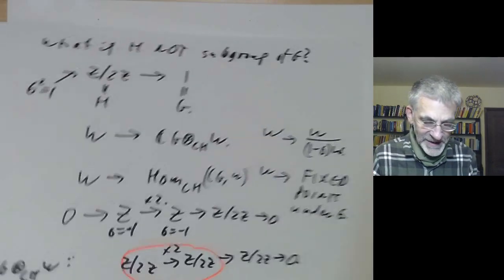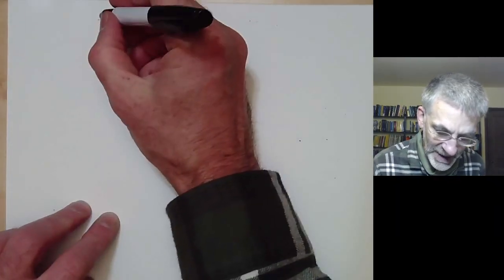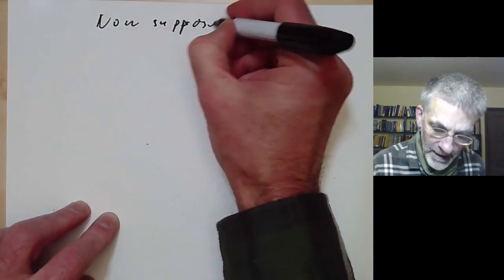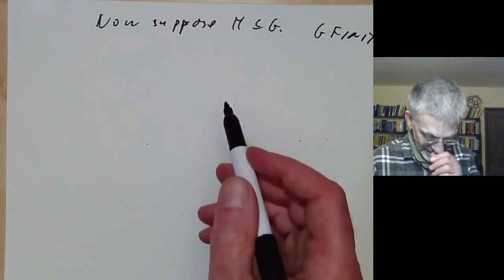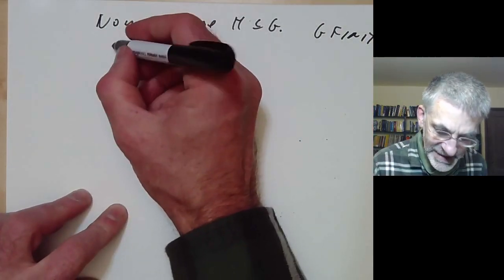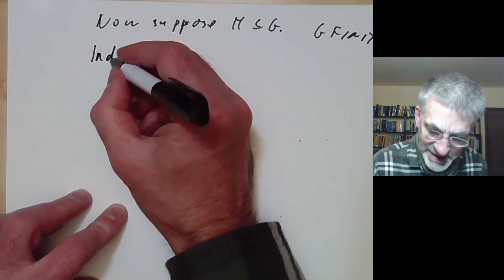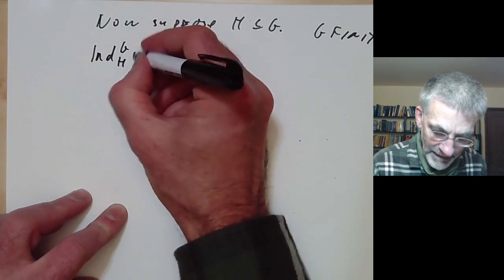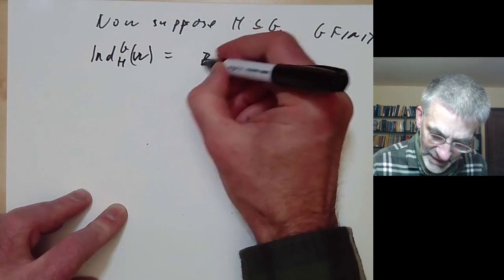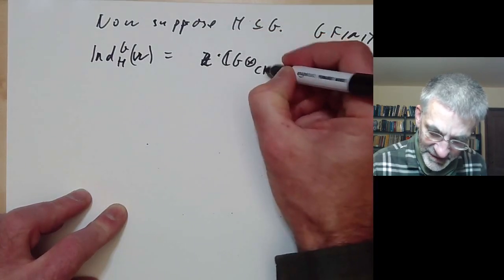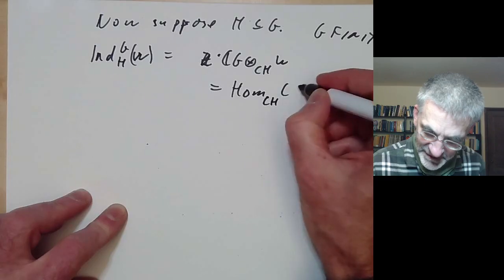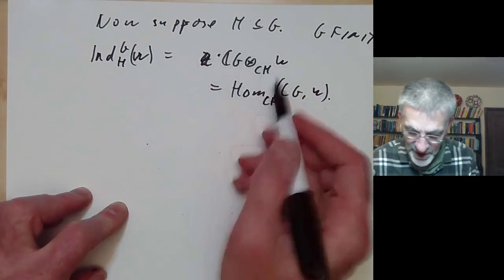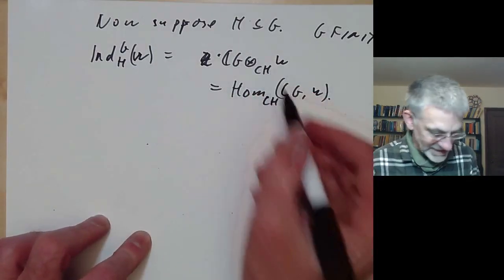For the rest of the talk, we'll forget about the case when H is not a subgroup of G, and just consider H a subgroup of G with G finite. In this case, the induced representation from H to G of W can be identified as either C[G] ⊗_{C[H]} W or as Hom_{C[H]}(C[G], W). So we don't need to worry about the different sorts, and both are exact — so everything is very nice.